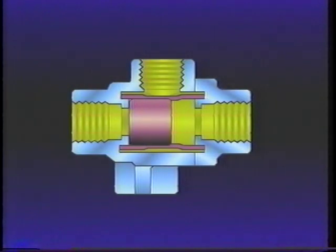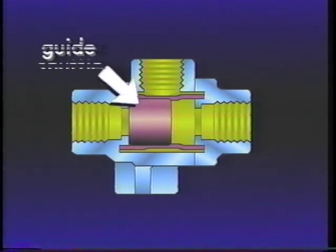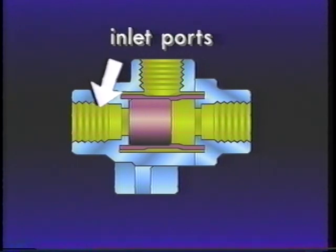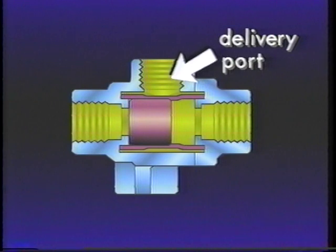The most common double check valve uses a shuttle contained in a guide which is installed in the body. The DC-4 has two inlet ports and one delivery port.